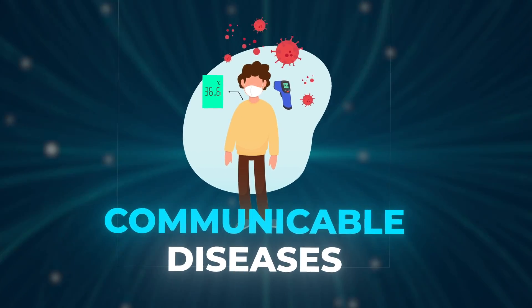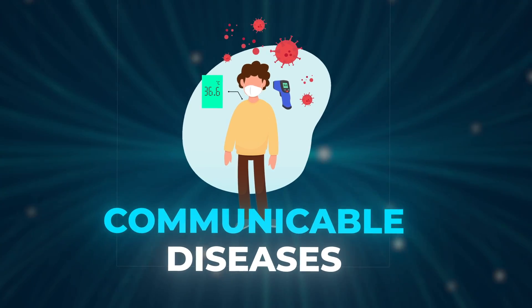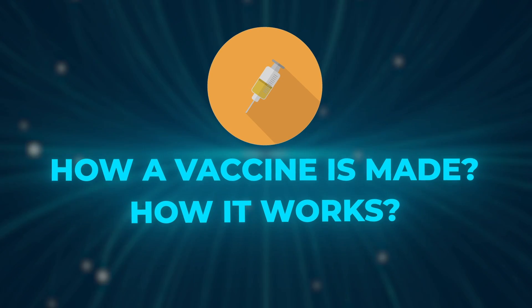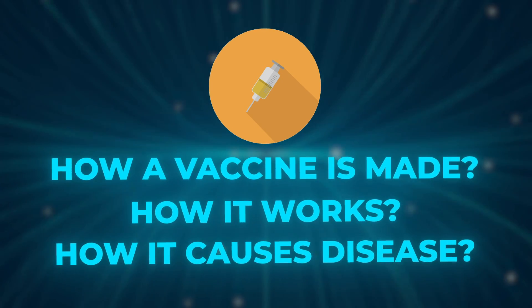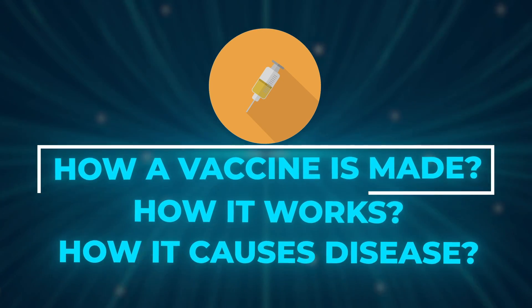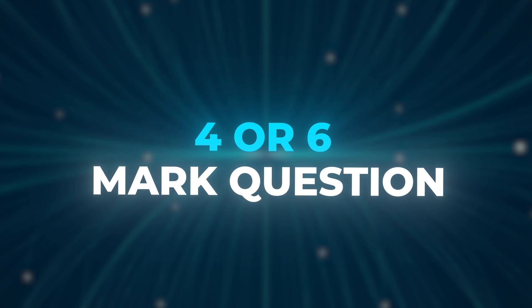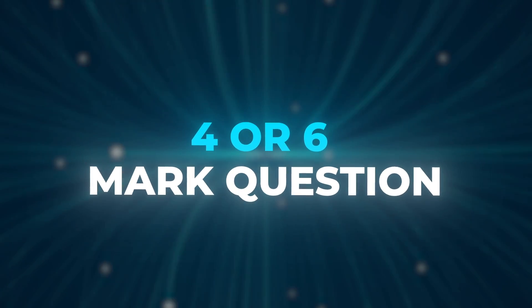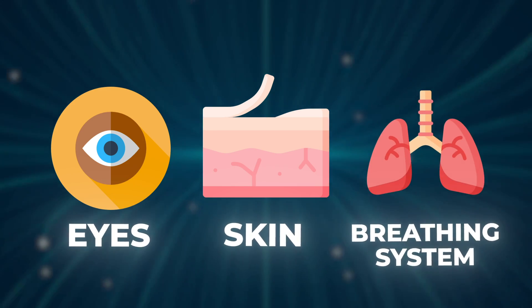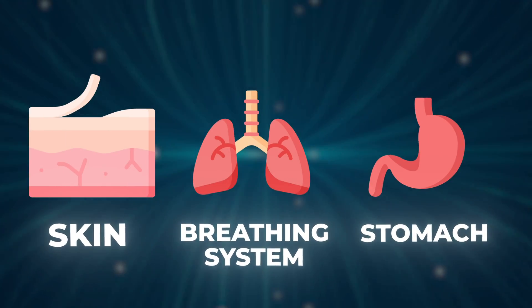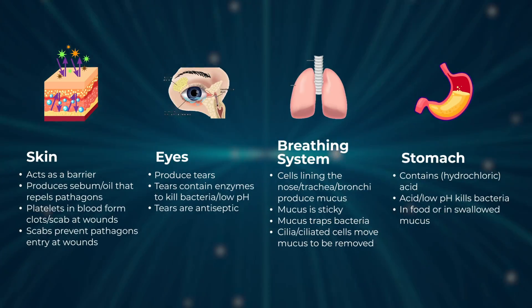The next topic that I think could come up is communicable diseases. As usual, make sure you know the definition of this and also know the processes involved in this topic — for example, how a vaccine is made and how it works, and also the entry of pathogens and how it causes disease. I think the vaccine question is a bit obvious, so potentially they could go for the entry of pathogens that cause disease. This could come up as a four or six mark question, so make sure to split your answer up. I would do it in terms of eyes, skin, breathing system, and also the stomach, and I'll put some points on here that you can take note of and learn for your revision.